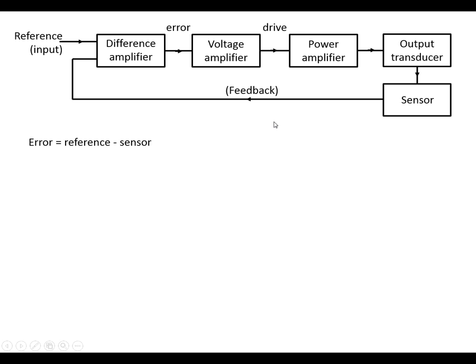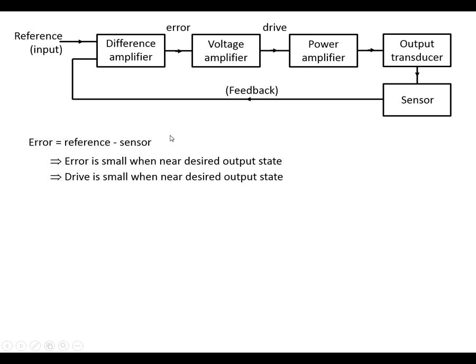The error signal is going to be the difference between the reference and the sensor, which means that when we're close to where we want to be, the feedback is close to the reference, then it's going to be very small. This means that the drive is going to be small when we're near the desired output state, which means we get no hunting.